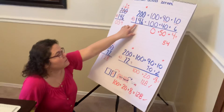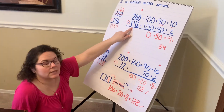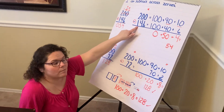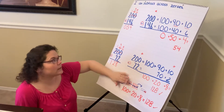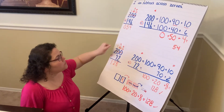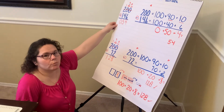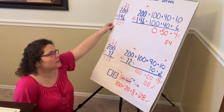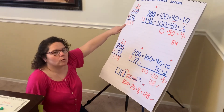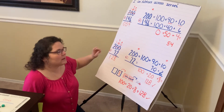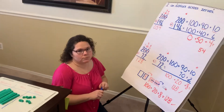Again that partner matches with my other two solutions. So we are subtracting across zeros using the expanded form method. You can always use that proof drawing. Our new thing that we learned today is the ungroup first method. Have fun practicing. We will see you soon.